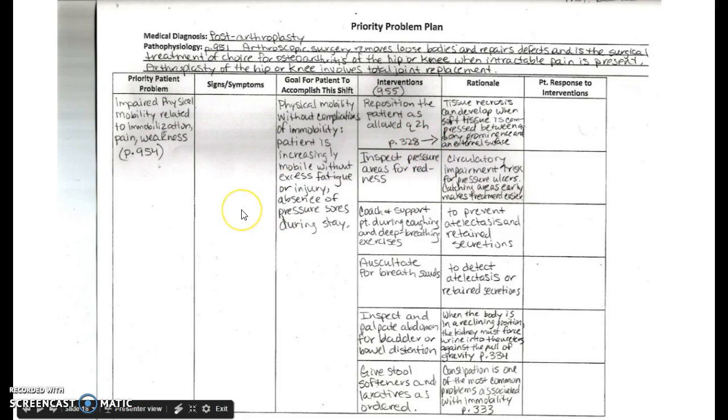So interventions. The green ones don't have the interventions with them. But as you'll see on our next one, some of them do. But the interventions are in the text. So on page 955, you see right in the middle of the page, it says, impaired physical mobility, in bold. And I picked out all of my interventions from that paragraph right there. So the first one I found was about three, four sentences down. It says, reposition the patient as allowed. And so I copied that. I added every two hours because that's typically when we're going to reposition a patient. Next, I have inspect pressure areas for redness. And in your book, it says, inspecting pressure areas for redness caused by circulatory impairment. Well, there it gives me the rationale right behind it. So I put inspect pressure areas for redness here. Circulatory impairment increases the risk for pressure ulcers. Catching areas early makes treatment easier.